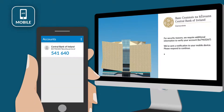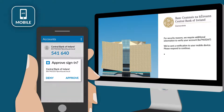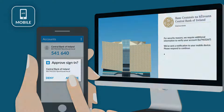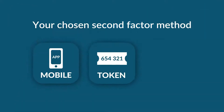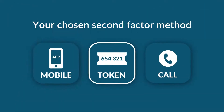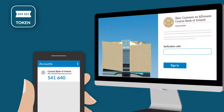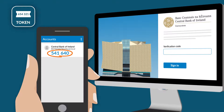If your second factor method is the mobile app, check your device for a notification and click Approve. If your second factor method is a token, open the app and find your code on the account screen. Enter the code into the portal login screen.